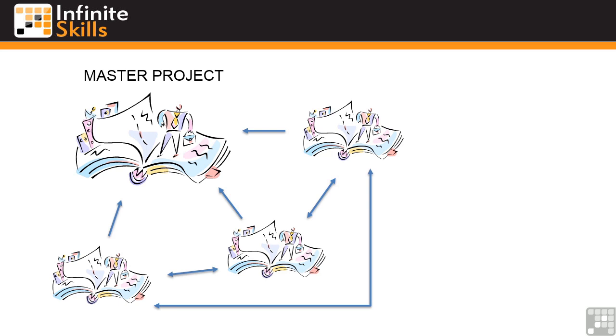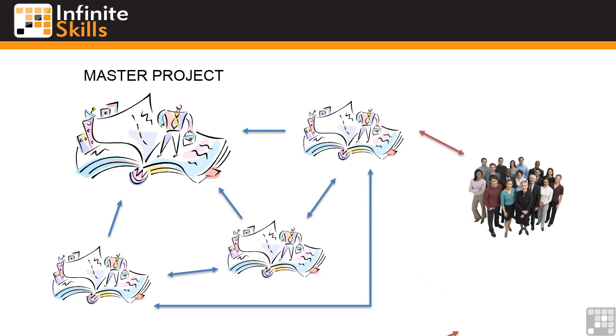And one of the powerful options for creating dependencies is for each of the projects to share a set of resources. So we could have a set of resources that is completely external to each of the sub-projects and to the master project. But then we can link these resources, and this is called resource pooling, to each of the sub-projects, and therefore make sure that person A is available in each of the projects when required and is not being over-allocated.